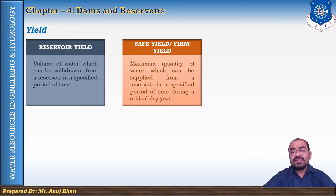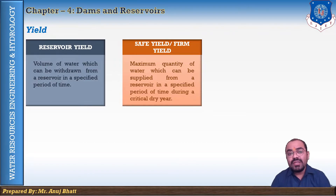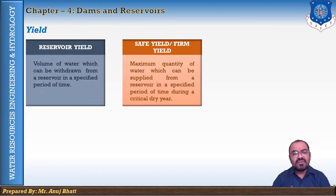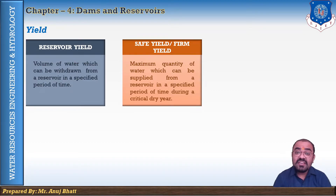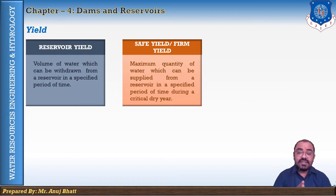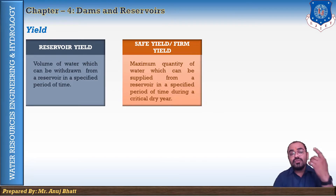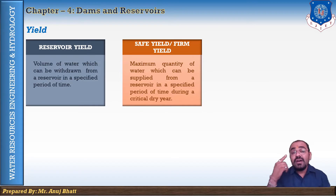The safe yield, also called the firm yield, is the maximum quantity of water which can be supplied during a critical dry period. Generally, the lowest recorded natural flow of the river over a number of years is taken as the critical dry period for determining the safe yield. However, there is a possibility that a drier period may occur with a yield even less than the safe yield determined on the basis of past records. This factor should be kept in mind while fixing the safe yield. This safe yield is the guaranteed yield as it is available from the reservoir to the users.